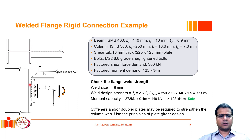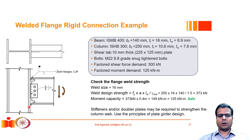We have now checked the safety of the bolts, the weld between the shear tab and column, and the welds between the beam flanges and the column. The remaining aspect — checking the safety of the column panel zone — will not be covered in this course and should be studied separately in the plate girder section using the Indian standard code and textbook. This concludes the discussion on non-ductile frame connections; subsequently, we will discuss ductile frame connections for earthquake loading conditions.